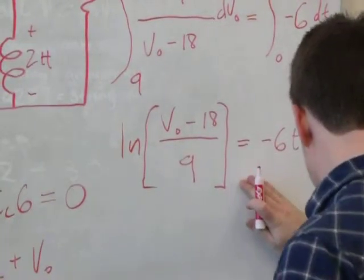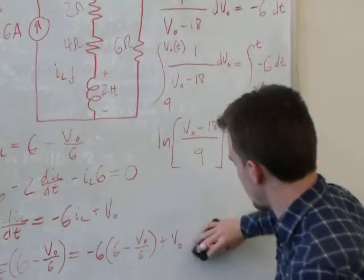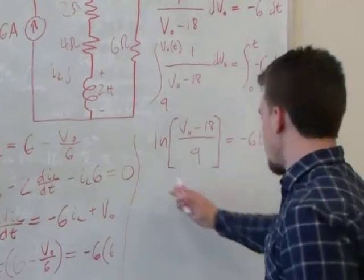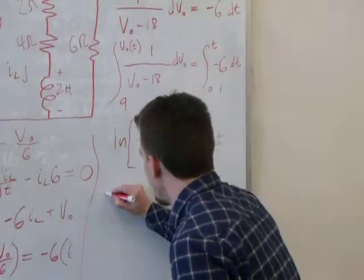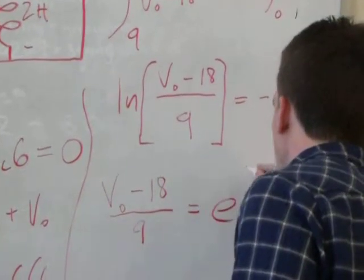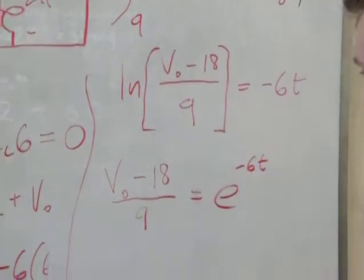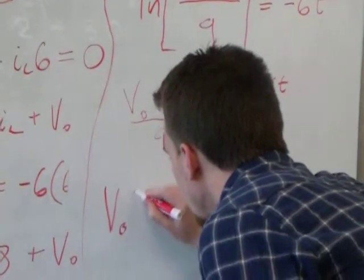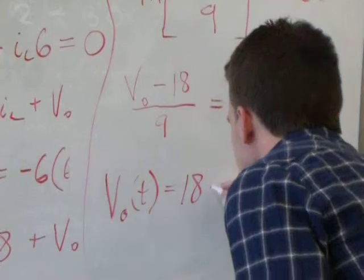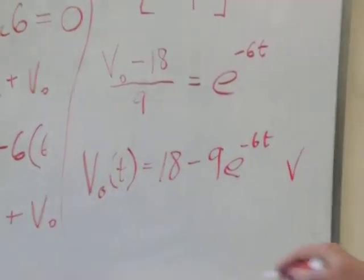The integration is relatively straightforward. We can rearrange by taking the exponential of both sides. After a little bit of algebra, what we finally get is that V-nought as a function of time is equal to 18 minus 9 times our exponential expression. And that's our answer.